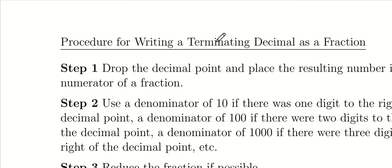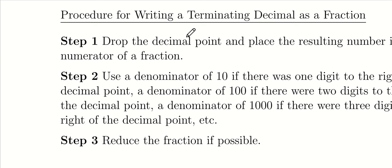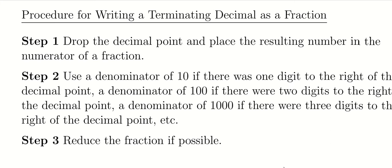The next procedure is writing a terminating decimal as a fraction. We've gone from fraction to decimal via long division; now we go backwards. Drop the decimal point and place the resulting number in the numerator. For the denominator, use the power of 10 corresponding to the furthest right decimal place: if it's in the tenths, put it over 10; hundredths, over 100; thousandths, over 1,000. Then reduce the fraction if possible.